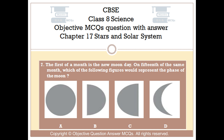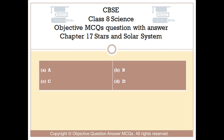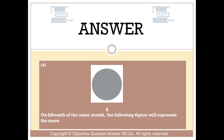Question number 7. The first of a month is the new moon day. On the 15th of the same month, which of the following figures would represent the phase of the moon? Option A. Option B. Option C. Option D. The right answer is Option A. On the 15th of the same month, the following figure will represent the moon.